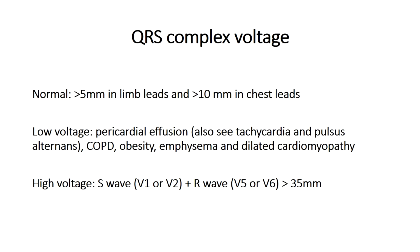High voltage QRS complexes typically occur in patients with hypertension who develop left ventricular hypertrophy (LVH). A common criterion is measuring the depth of the S wave in V1 plus the height of the R wave in V5 or V6 — if this sum is greater than 35 millimeters (seven boxes), the voltage criteria for LVH are met. However, this is not diagnostic on its own; an echocardiogram supporting the finding is also needed to confirm LVH.